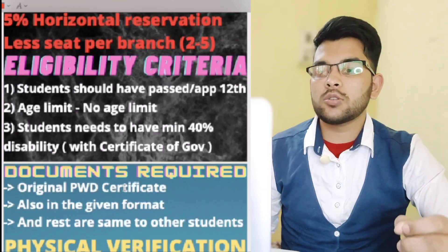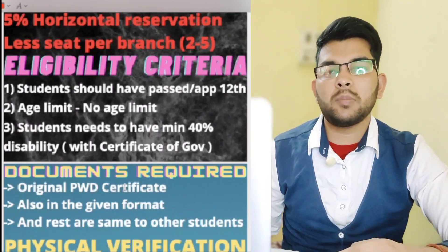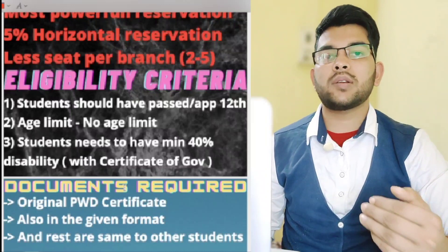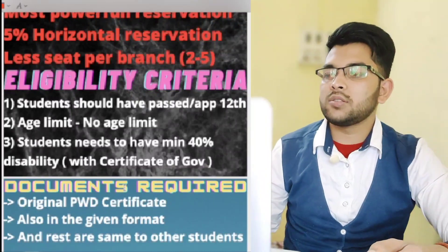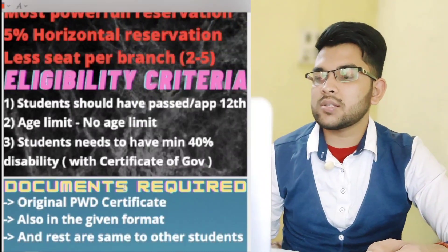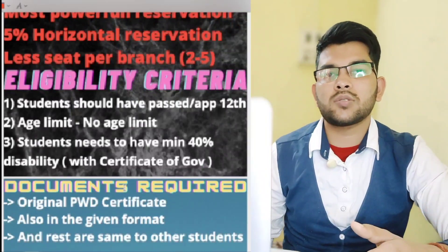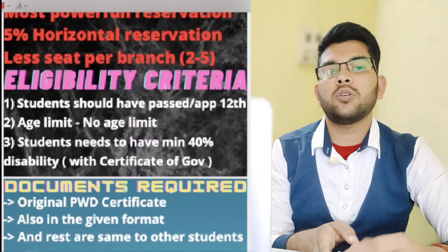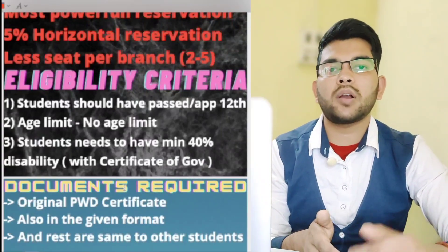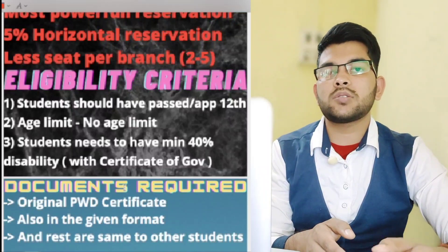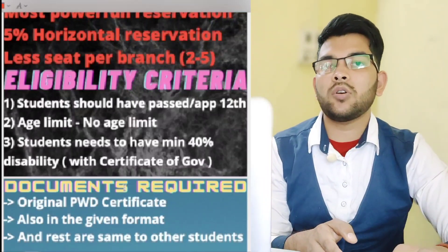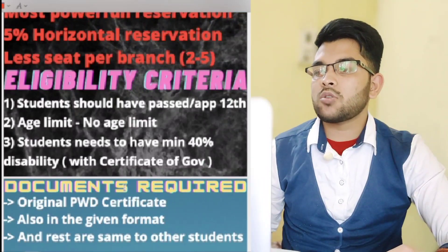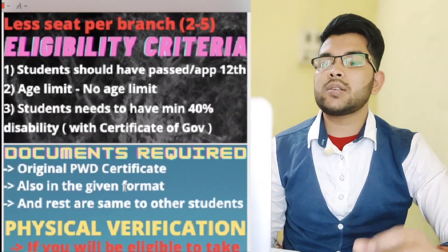You should also have a government-issued PWD certificate. Regarding documents required: the original PWD certificate in the given format available in the information brochure will be required at the time of counseling. The rest are the same as for other students — Class 12th marksheet, Class 10th marksheet, and admit card. These will be verified at the time of counseling to confirm your admission.